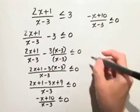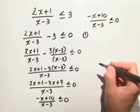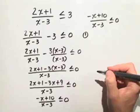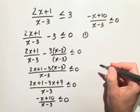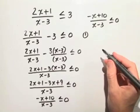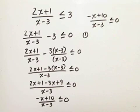So we start with step 1. We need to find the boundary points. In this case, the boundary points are any numbers that make the numerator or the denominator equal to 0.